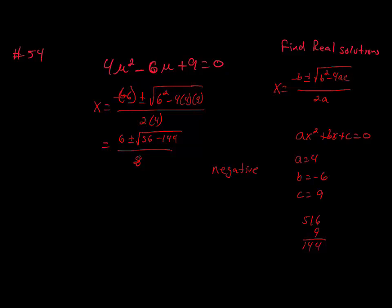When the discriminant is negative, there are no real solutions. So the solution to this problem is the empty set. You can write it as the empty set symbol or using set notation. And that's the end of the 1.2 examples. Thank you.